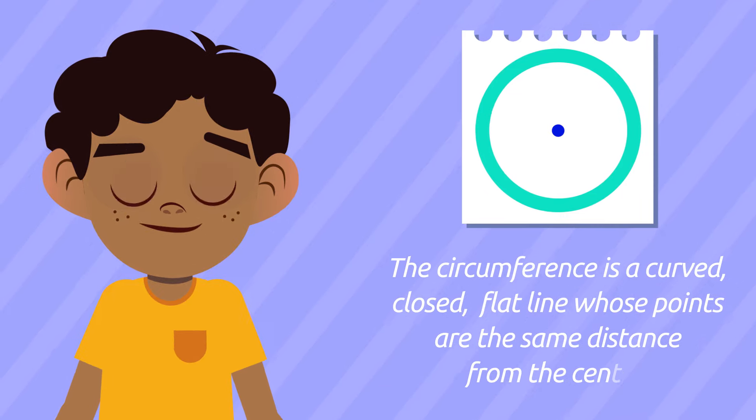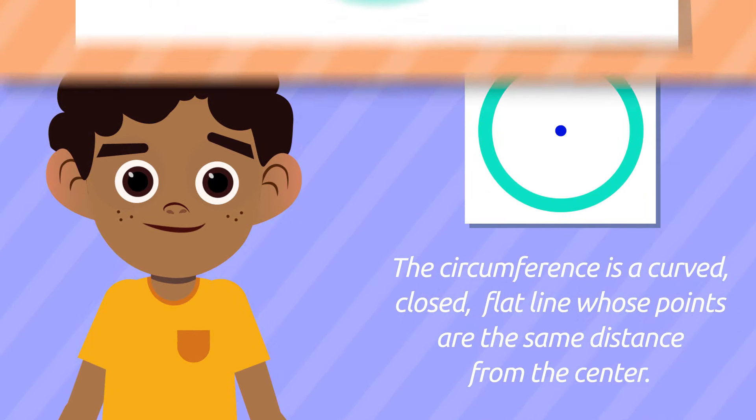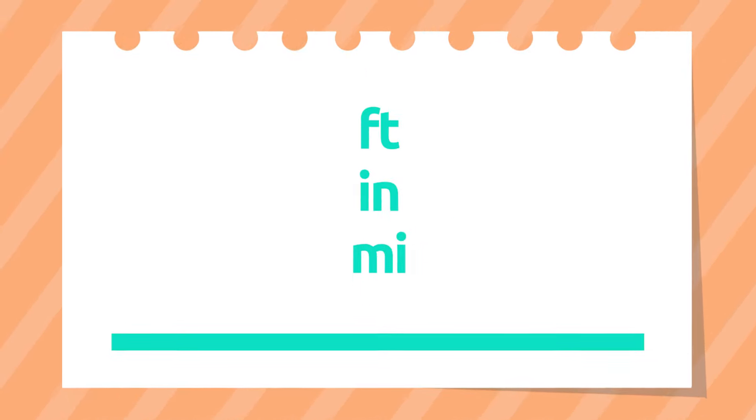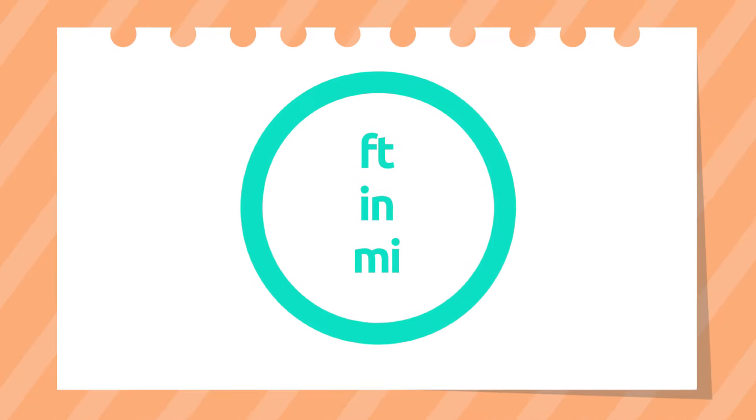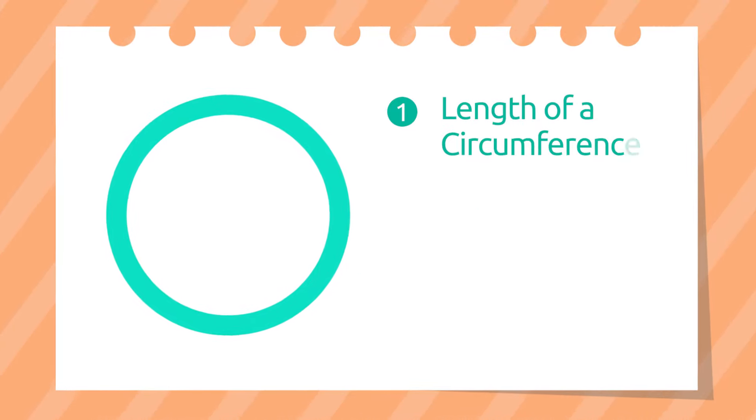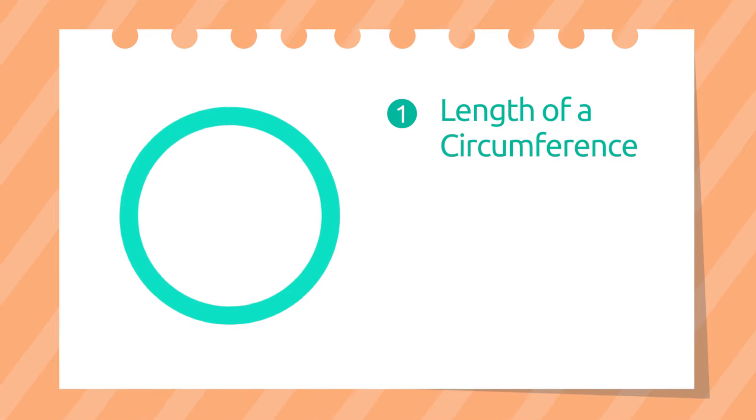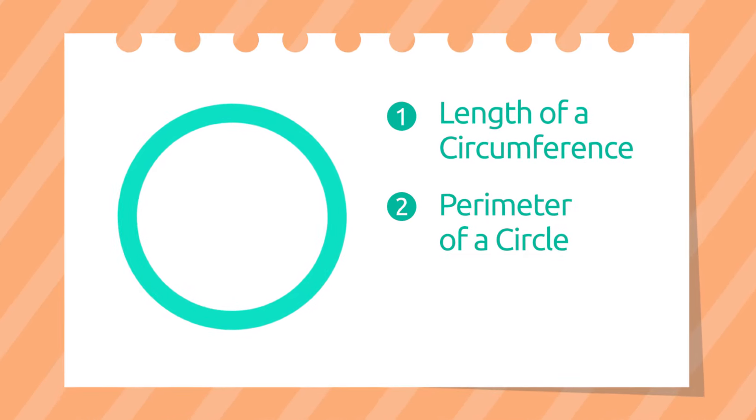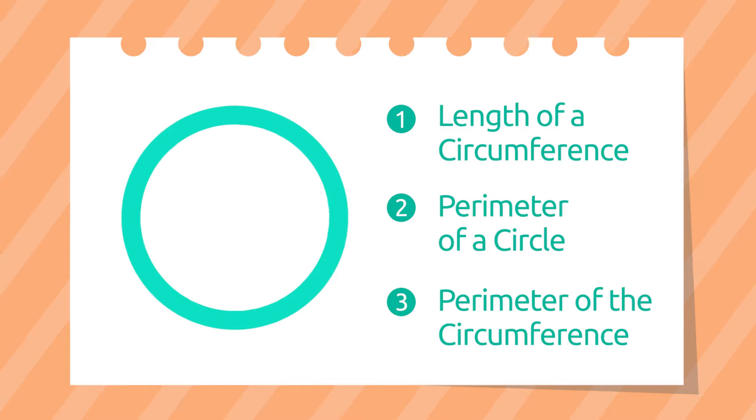Owing to the fact that it's a line, its length is measured in feet, inches, or miles. The concept length of a circumference can also be referred to as the perimeter of a circle or the perimeter of the circumference.